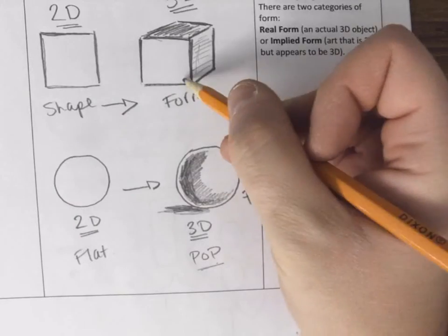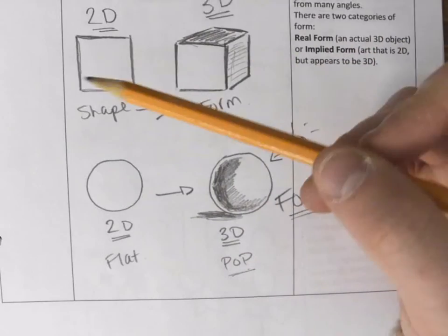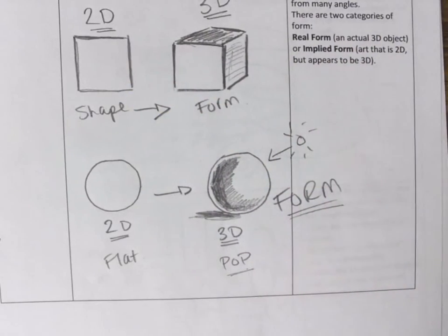So again, form is when something appears 3D. Shape is when something appears 2D.